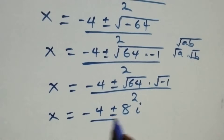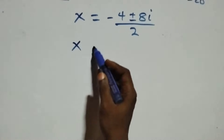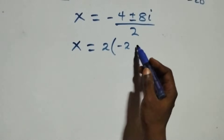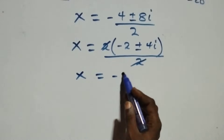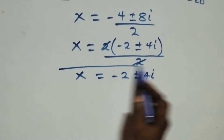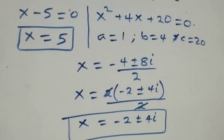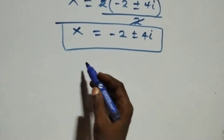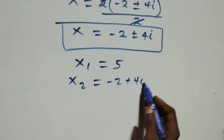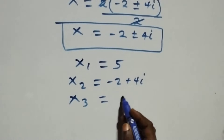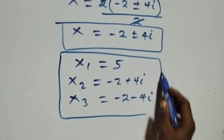Two is common in the numerator; we factor it out and we have x equals to 2 into brackets, here we have minus 2 plus or minus 4i, then over 2. Two cancels, and we have x now equals to minus 2 plus or minus 4i. So we have two complex solutions, and altogether three solutions. x1 equals to 5, x2 equals to minus 2 plus 4i, and x3 equals to minus 2 minus 4i. One real and two complex.